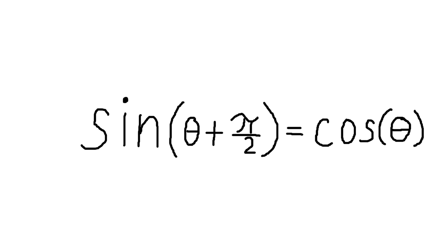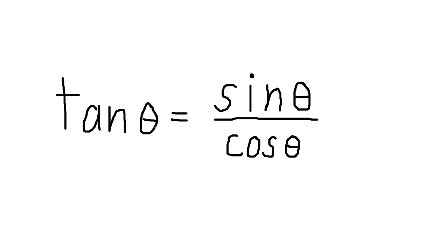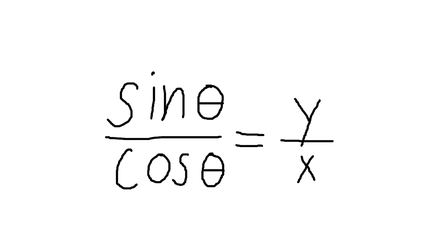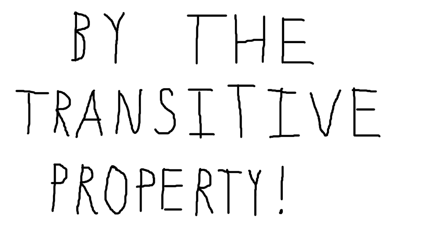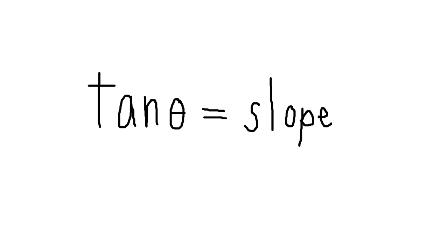Tangent of theta is just sine of theta over cosine of theta. But wait. If sine of theta is just y, and cosine of theta is just x, then tangent of theta is just y over x, which is slope. Tangent is just slope.